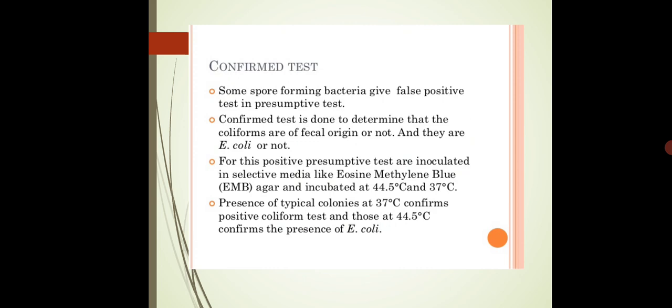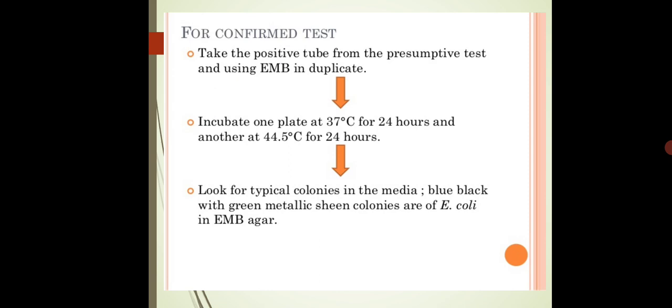For confirmation we have the confirmed test. We use the positive presumptive tubes, which are inoculated or streaked onto selective media like EMB media. EMB media stands for Eosin Methyl Blue. This is a selective media especially for gram-negative bacteria, and it inhibits gram-positive bacteria.